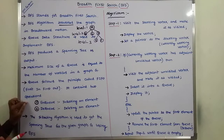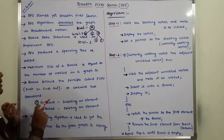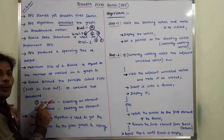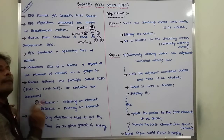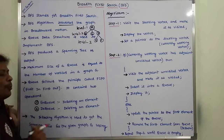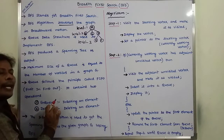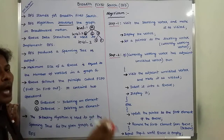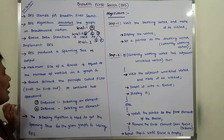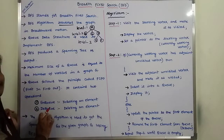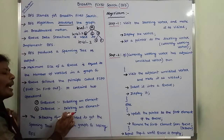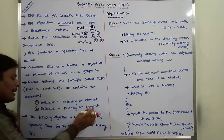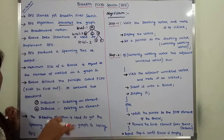There are two operations that can be performed on the queue. The first one is ENQ and the second one is DEQ. ENQ means inserting an element into the queue, and DEQ means deleting an element from the queue.